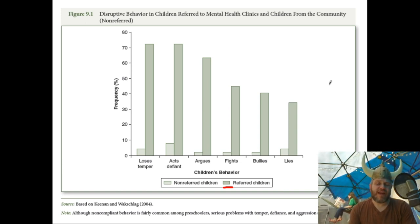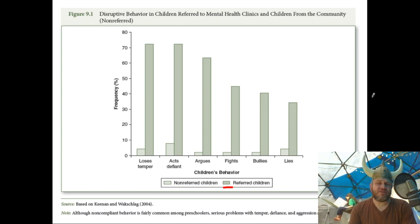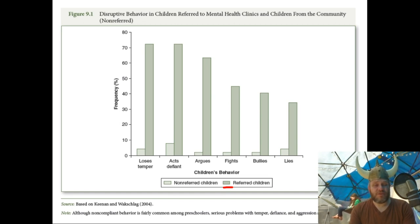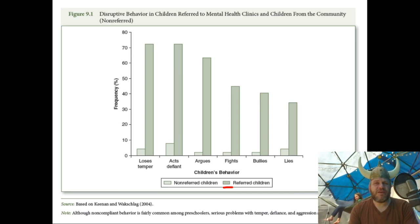Externalizing problems — like all the stuff in this chapter — are more common among boys. Internalizing problems are somewhat more common among girls. Internalizing problems are depression and anxiety basically; externalizing includes substance use, conduct disorder, oppositional defiant disorder. Externalizing means you're causing problems externally, disrupting the world around you. Internalizing, you're disrupting your own world — you're miserable and suffering but not inflicting it nearly as much on the people around you. When you're not inflicting it on others, you don't get as much help — and that's a big problem because you're still suffering.